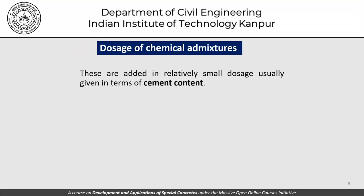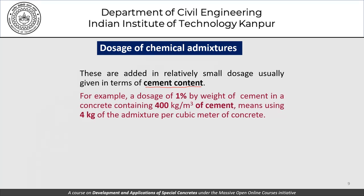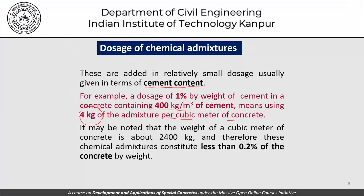Chemical admixtures act on the hydration process, so their dosage is often given in terms of the cement content — as one percent, half a percent, or one and a half percent of the cement content in the mix. For example, a one percent dosage by weight of cement in concrete containing 400 kg per cubic metre of cement means that four kg of that admixture per cubic metre of concrete should be added. It should be noted that the weight of a cubic metre of concrete is about 2400 kg.